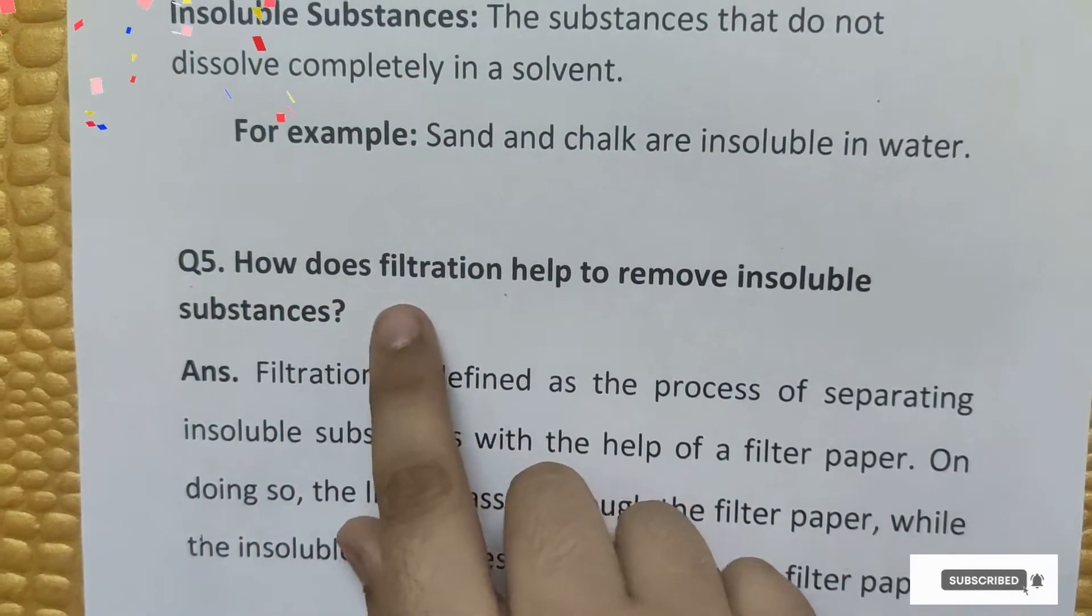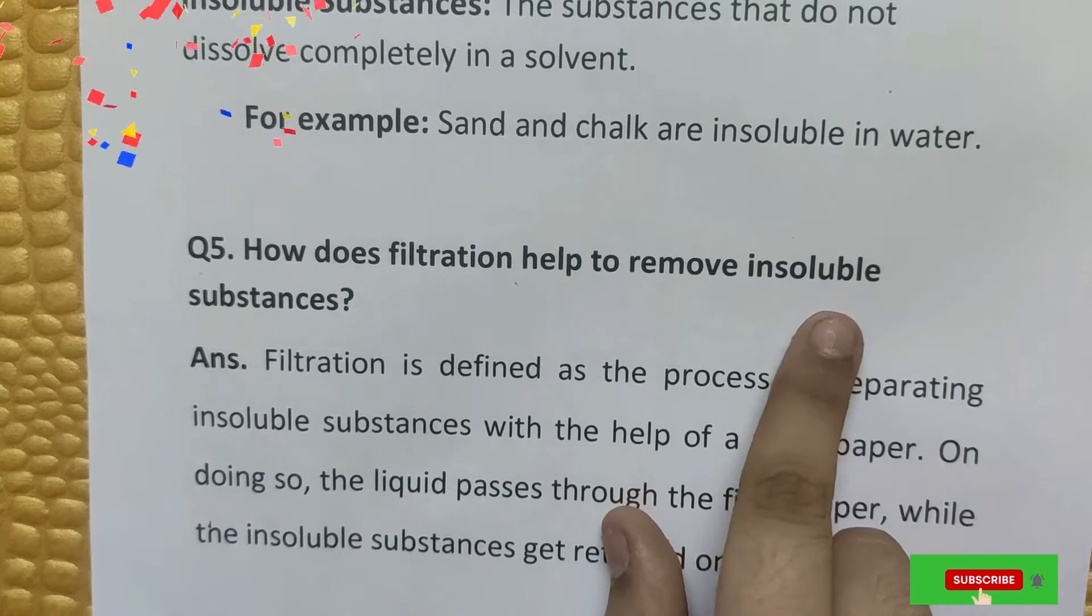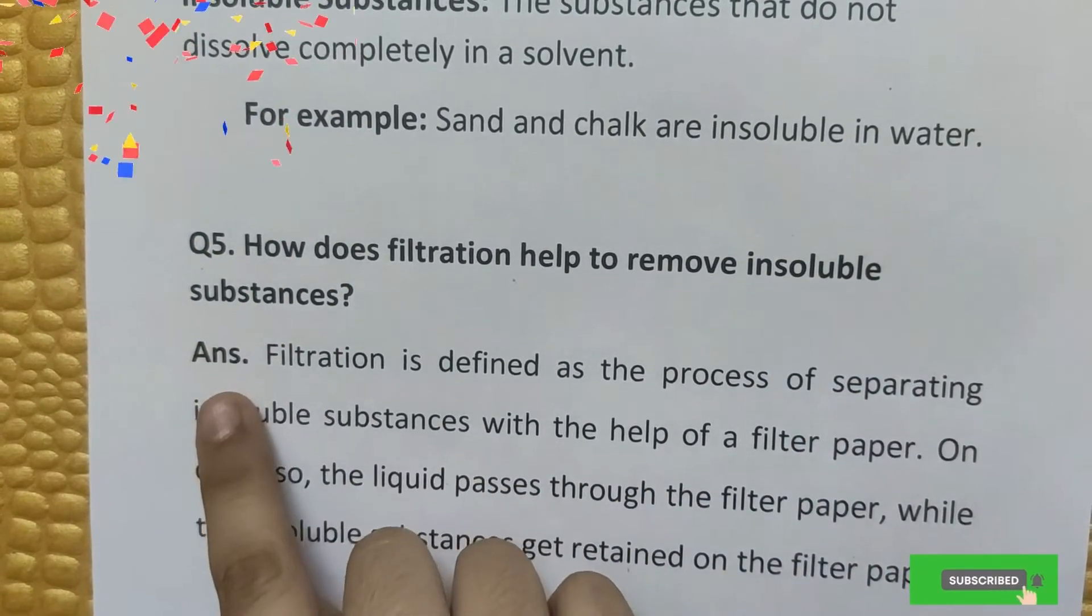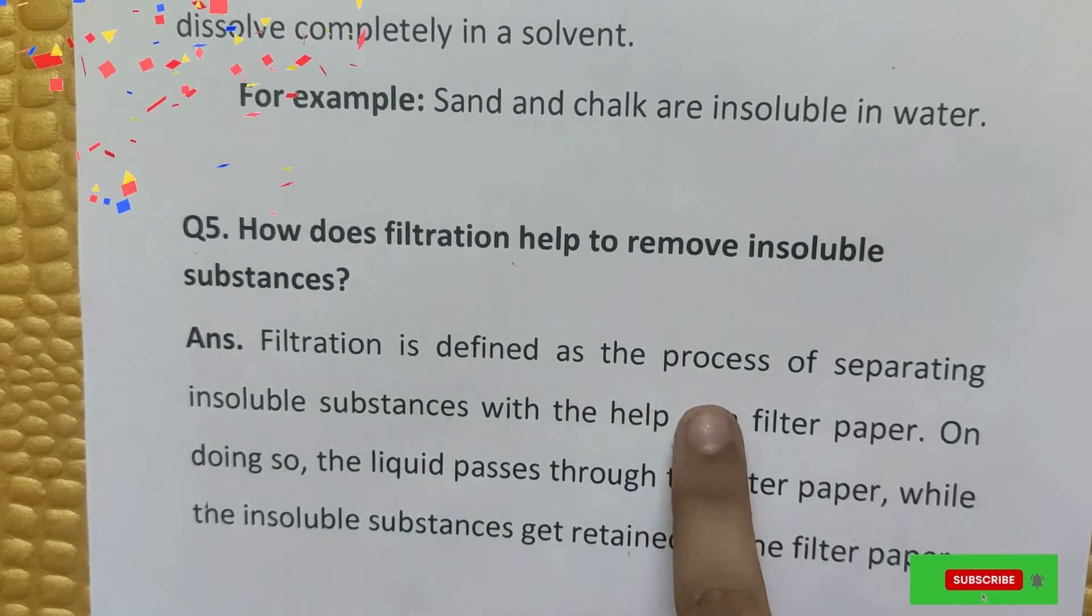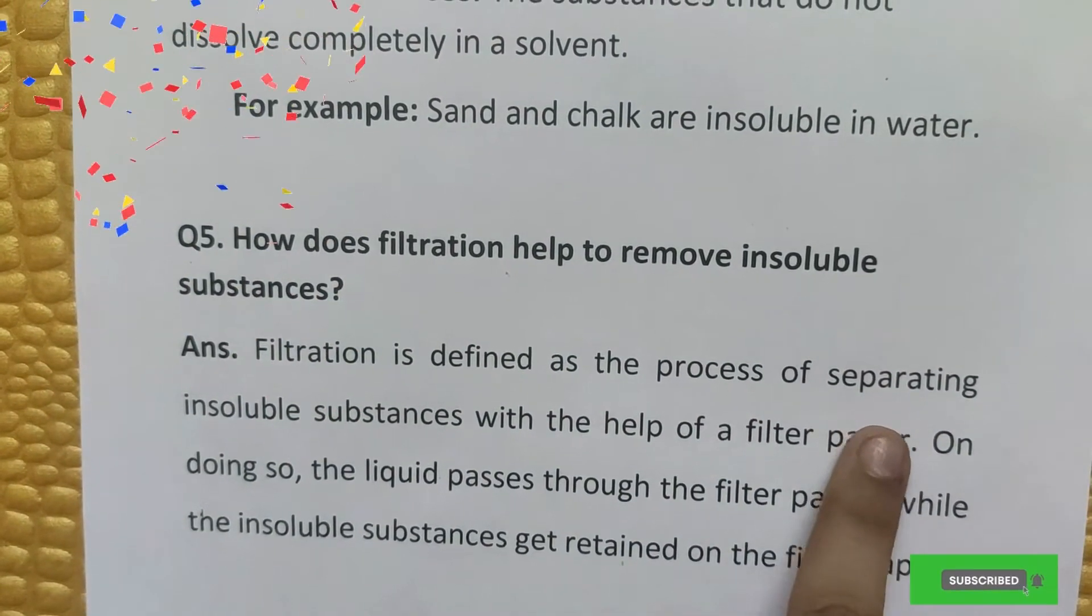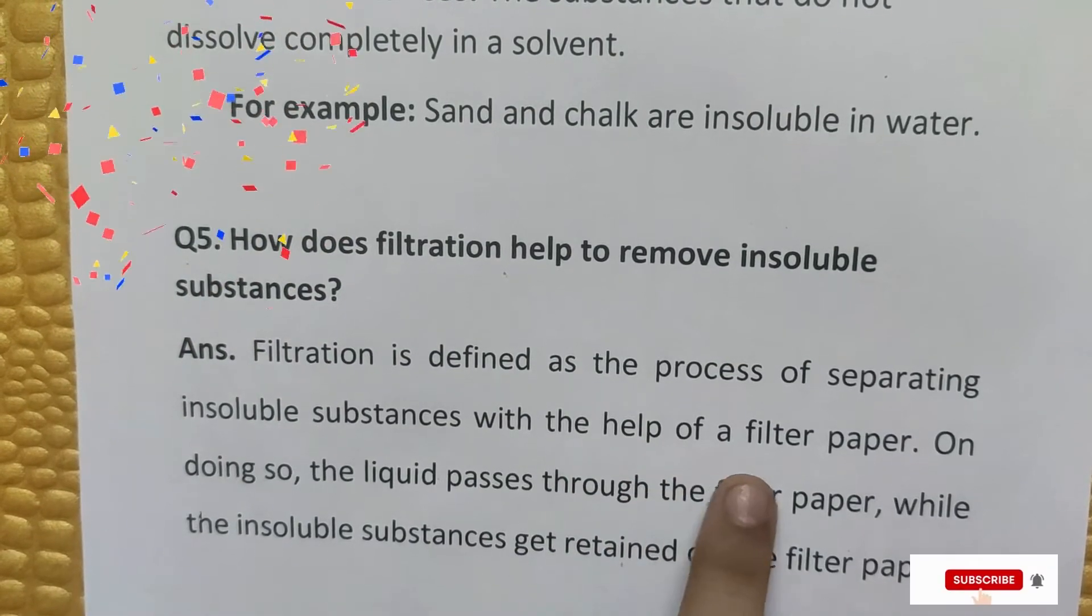Question number five: How does filtration help to remove insoluble substances? Answer: Filtration is defined as the process of separating insoluble substances with the help of a filter paper.